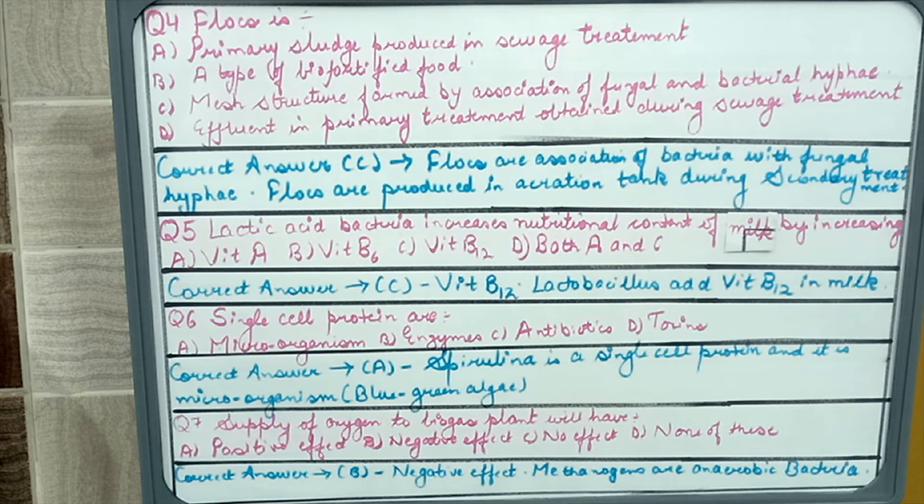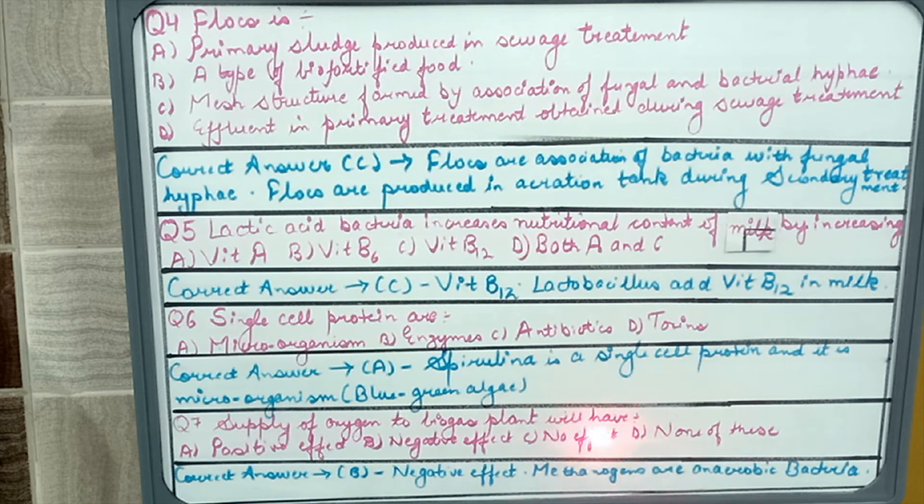Question number seven: supply of oxygen to biogas plant will have positive effect, negative effect, no effect, or none of these. The answer would be that if we supply oxygen to biogas plant it will have negative effect. This is because the organisms which produce biogas are methanogens. These methanogens can only act under anaerobic condition. So if they would be supplied oxygen, methanogens would be killed and there would be no production of biogas.